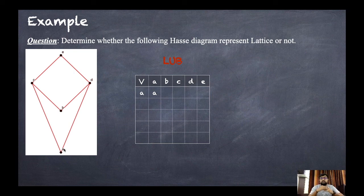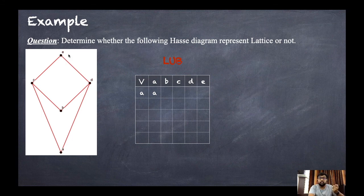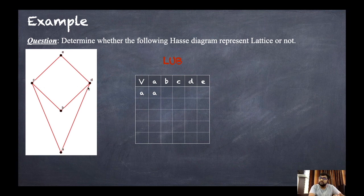LUB of a and a is a. For LUB of a and b: the upper bounds are c and d. We check if a relates to c, b relates to c, and also to d. Both c and d are upper bounds, but c and d are not related to each other, so there is no single least upper bound — LUB of a and b is dash (null).